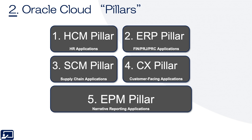Second topic: Oracle Cloud Pillars. Here are the five pillars within Oracle Cloud SaaS applications as of Q3 2021. First, the HCM pillar — focused on human resource related applications. Second, the ERP pillar — focused on finance related applications. Third, the SCM pillar — focused on supply chain related applications. Fourth, the CX or customer experience pillar — focused on customer facing apps, also known as CRM applications. And finally, the EPM pillar — focused on narrative reporting. To learn about any pillar in detail, watch that pillar's lesson within its Discover course.